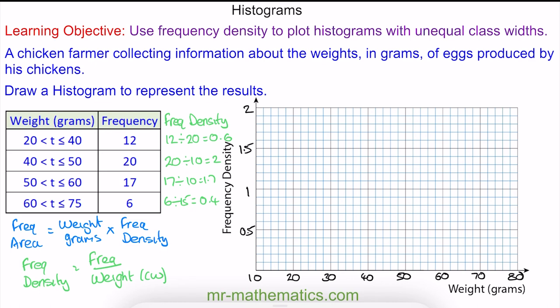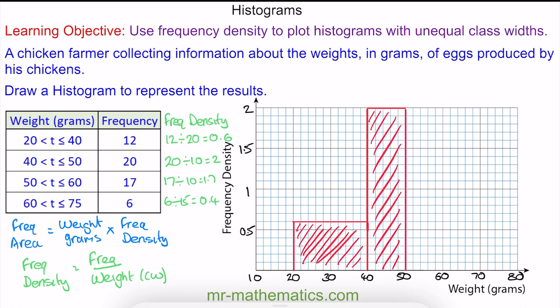Between 20 to 40 we've got a frequency density of 0.6. From 40 to 50, a frequency density of 2. From 50 to 60 we go up to 1.7, and finally from 60 to 75 we go up to 0.4.